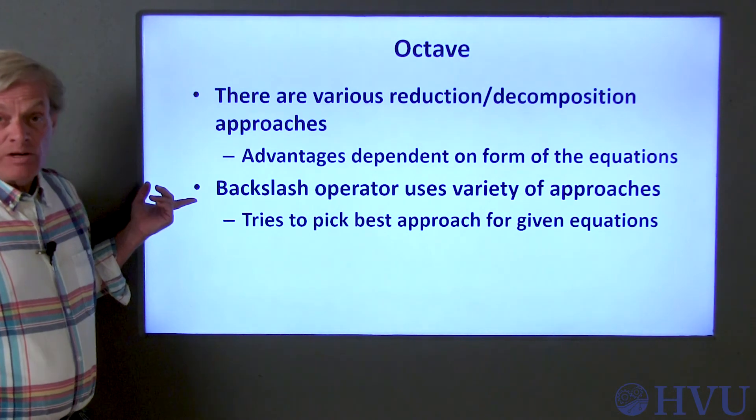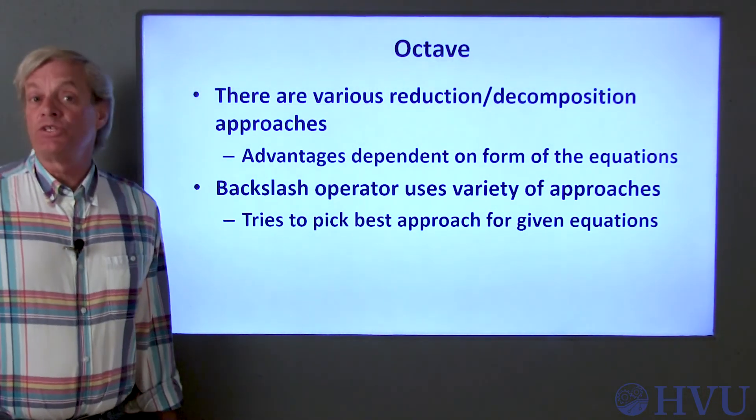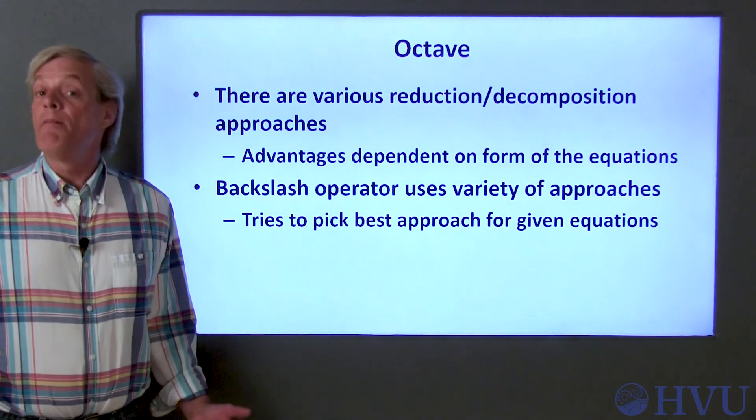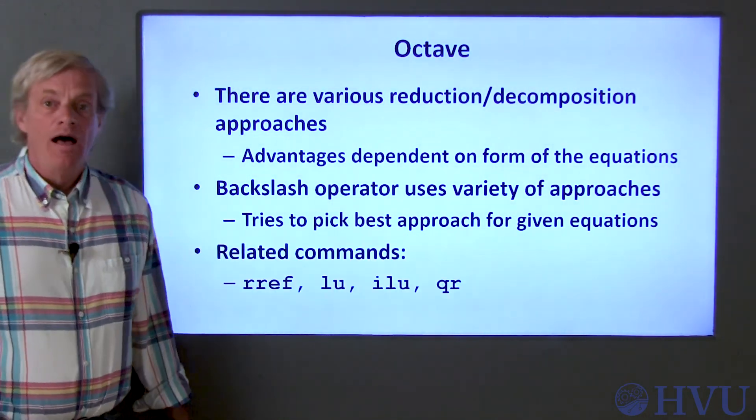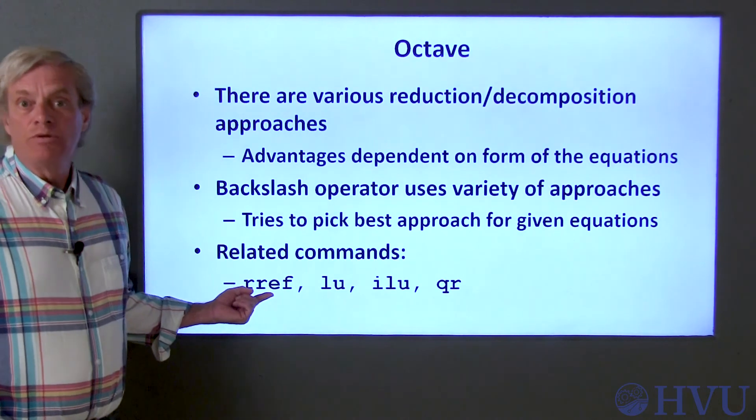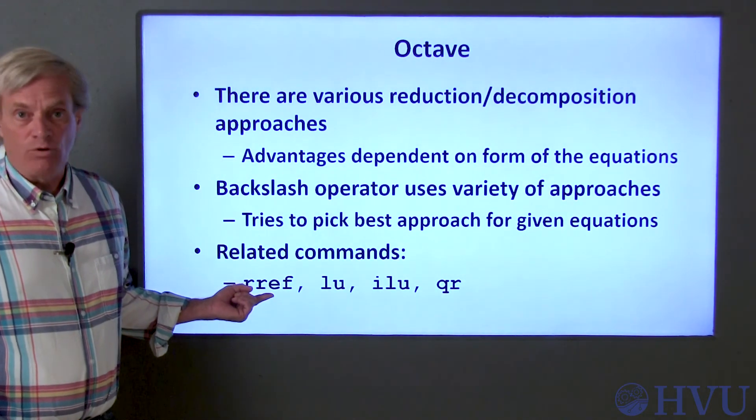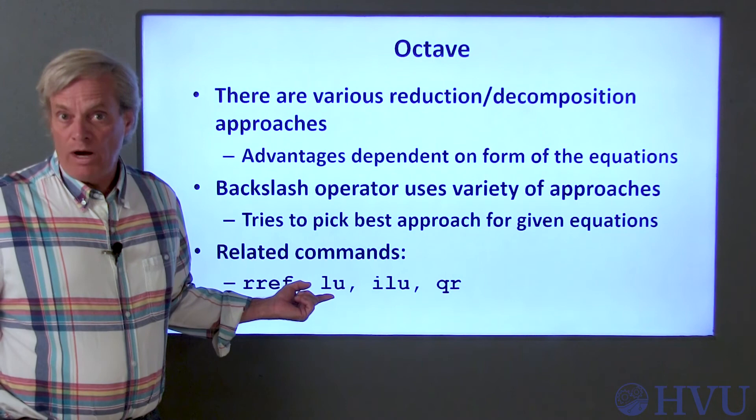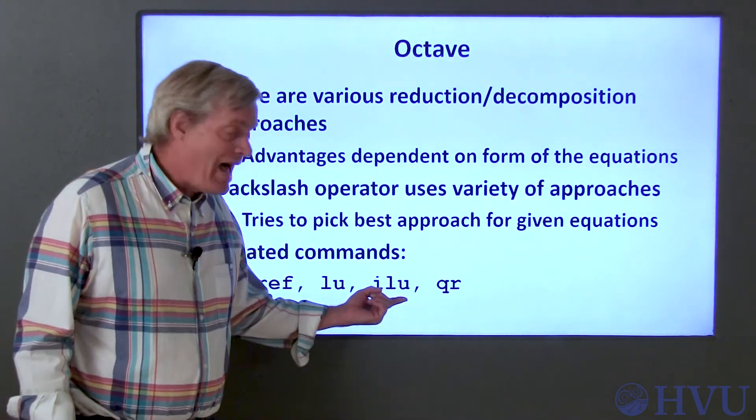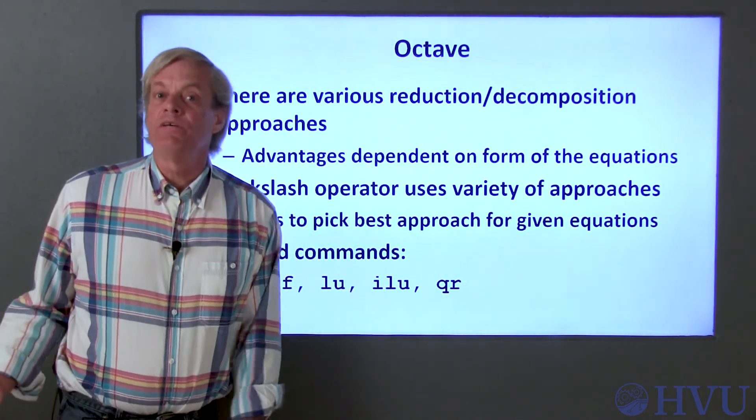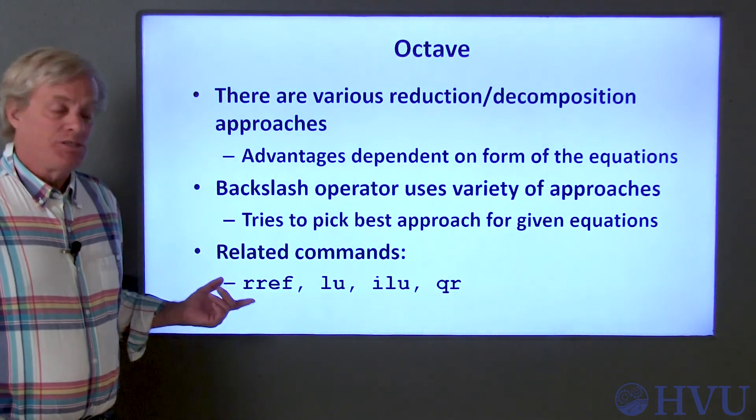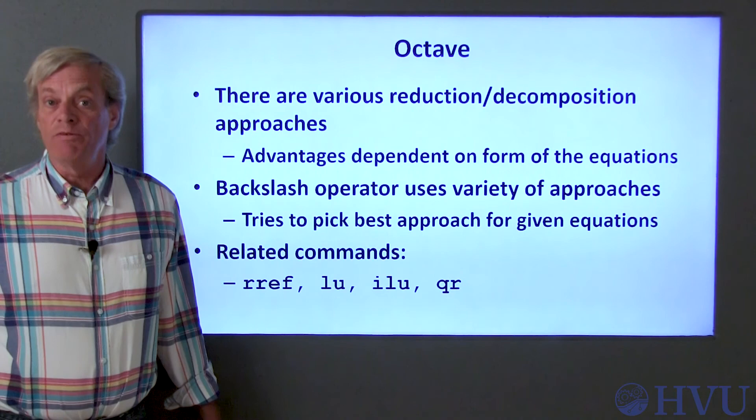Octave's backslash operator is very sophisticated. It examines the structure of the operand matrices and it tries to choose the best approach for performing the operation based on that structure. Octave has a variety of commands for matrix decomposition. A few of them are RREF, which stands for reduced row echelon form, LU, which stands for lower upper factorization, a variation of lower upper factorization called ILU, and QR, which is something called orthogonal triangular decomposition. Octave's backslash operator selects among these approaches when it solves a system of equations.